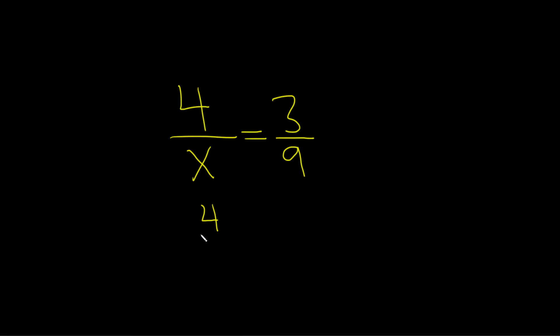So we have 4 over x, and that's equal to... Well, what we can do is we can ask ourselves, what number goes into both of these? Well, 3 goes into 3 one time, and 3 goes into 9 three times. So we can reduce it like that.